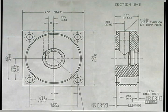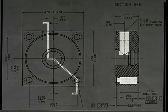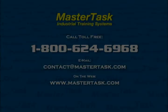Cutting plane line B on this print, however, is much more complex because it does not cut straight through the part. It follows a route that will make these two holes visible in section view B.